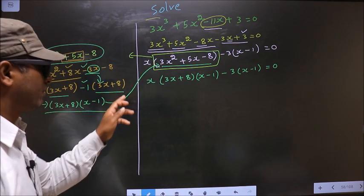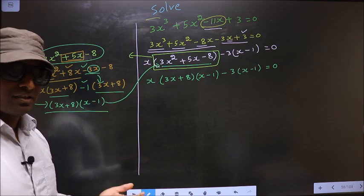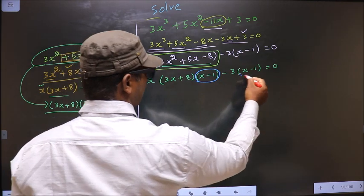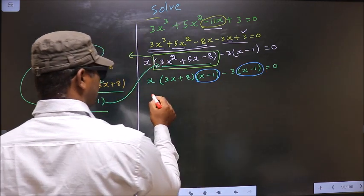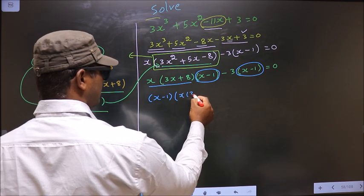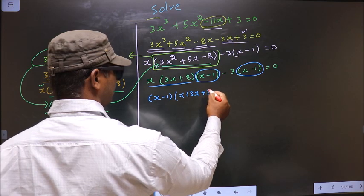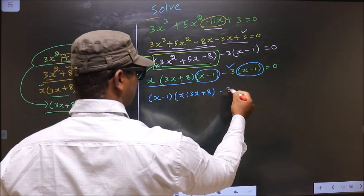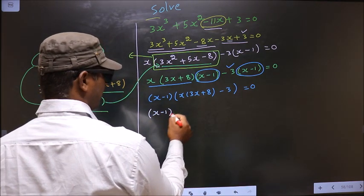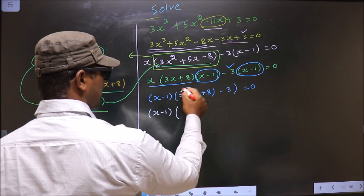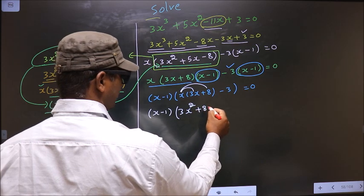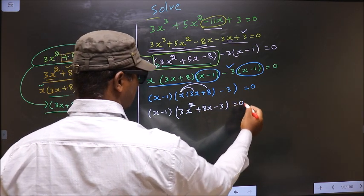Now from this entire equation what can be taken out common is x minus 1. So x minus 1 you write outside. Here you are left with x times 3x plus 8, and here you are left with minus 3, equal to 0. Now x minus 1 — you open up the bracket — that is 3x square plus 8x minus 3, equal to 0.